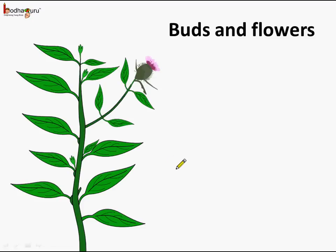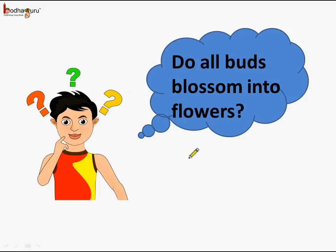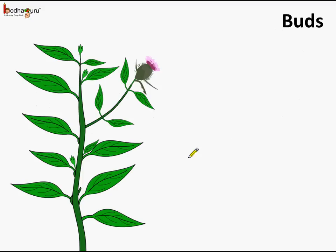We also know that the stem holds the buds and the flowers. This is a bud. Now the question is — do all the buds blossom into flowers? The answer is no.